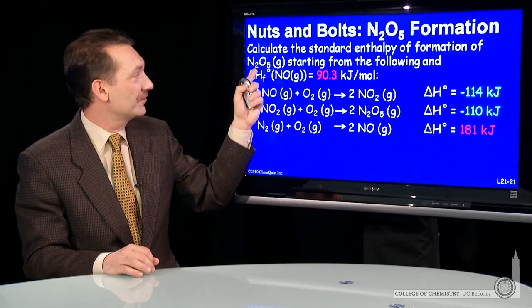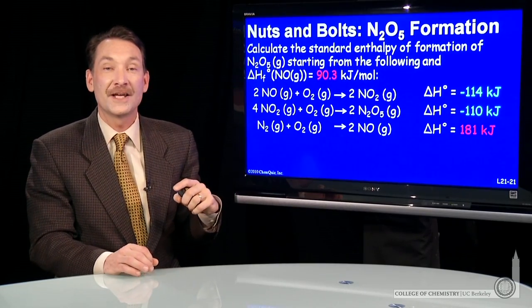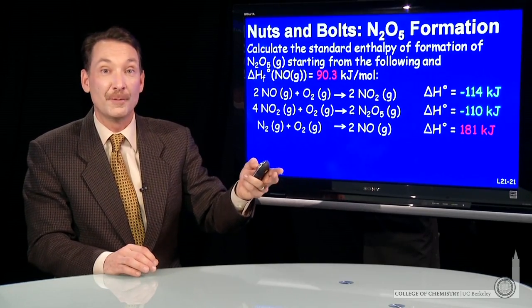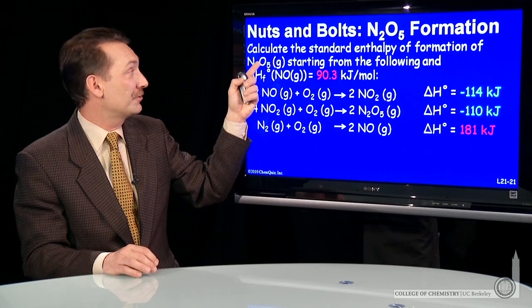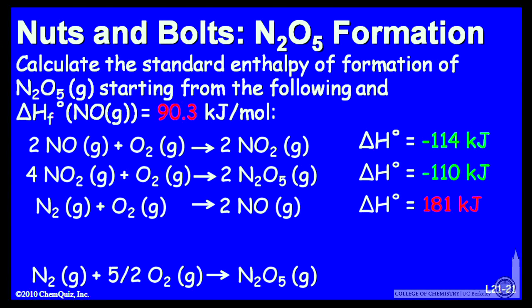Now, I want to find the enthalpy of formation for N2O5. I can write that because it's the enthalpy of formation. Again, it's a nitrogen oxygen compound, so the enthalpy of formation reaction is nitrogen gas, 5 halves mole of oxygen gas, gives me a mole of N2O5.